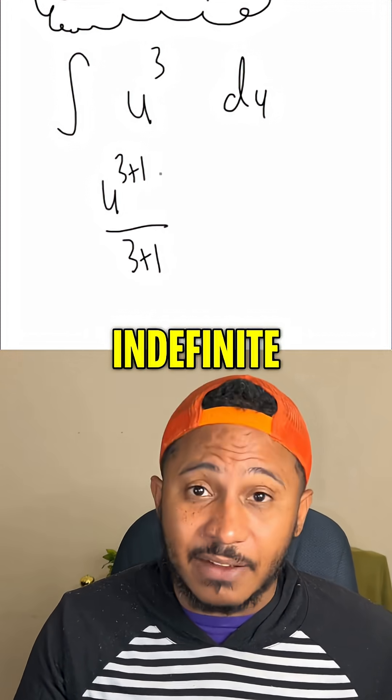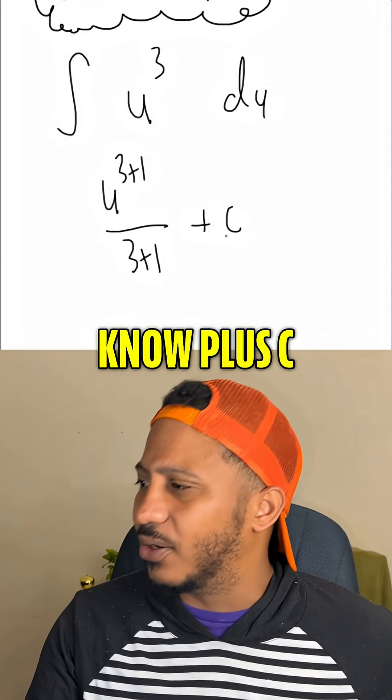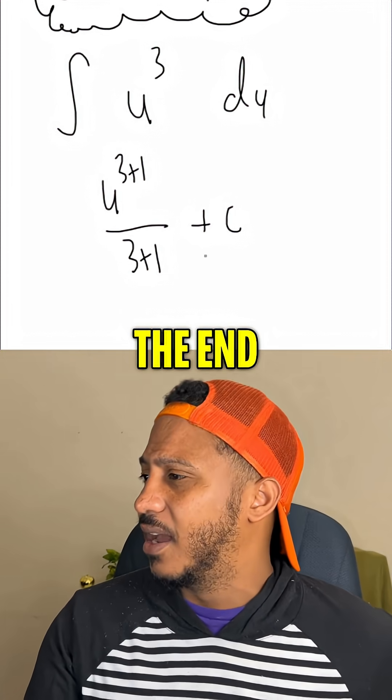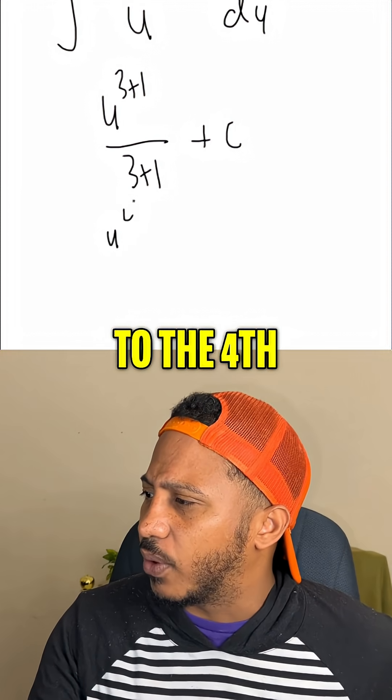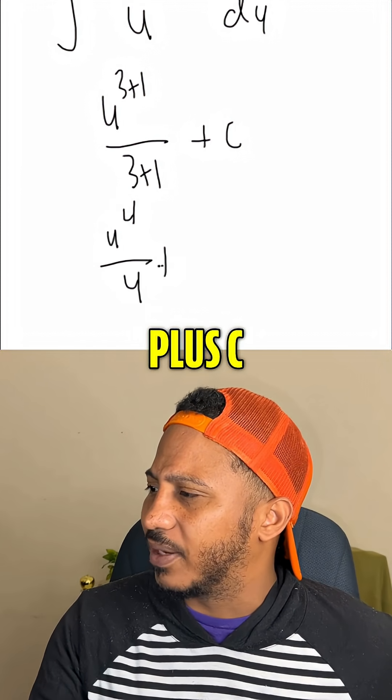Since this is an indefinite integral, then we know plus c. Got it. Put a constant at the end. So this becomes u to the 4th divided by 4 plus c.